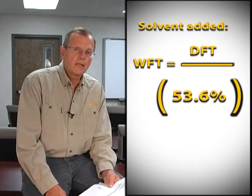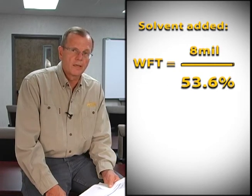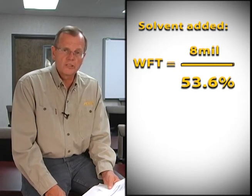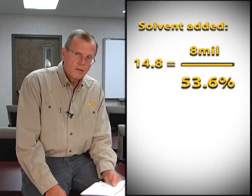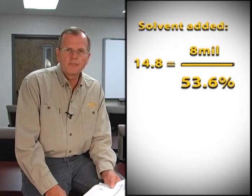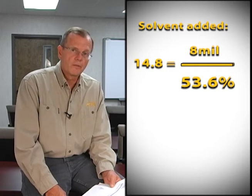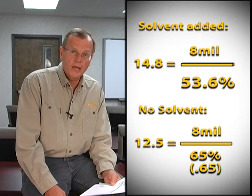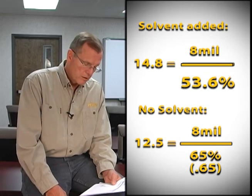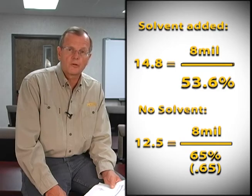Now put that into the original formula. I still want 8 mils dry. 8 mils divided by the new solids after thinning — 53.6 percent — is 14.8, or about 15 mils. So you can see that by thinning the material 12 percent, I have to apply more wet film. Without thinning, I was applying 12.3 mils, about 12 and a half. After thinning, I'm applying about 15 mils to get the same 8 mil dry film thickness.